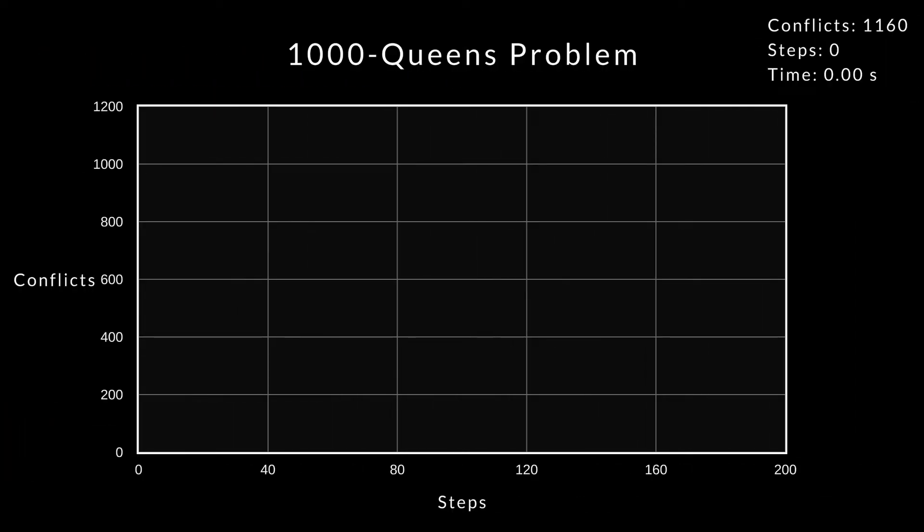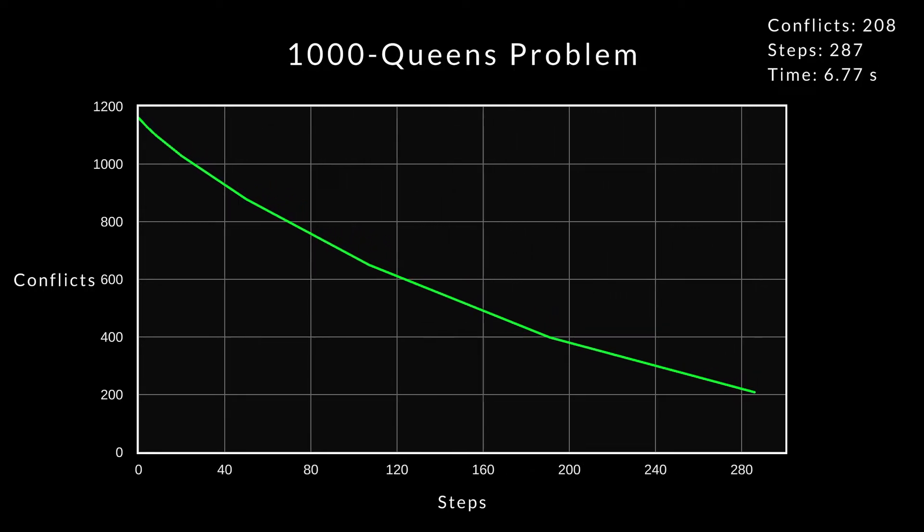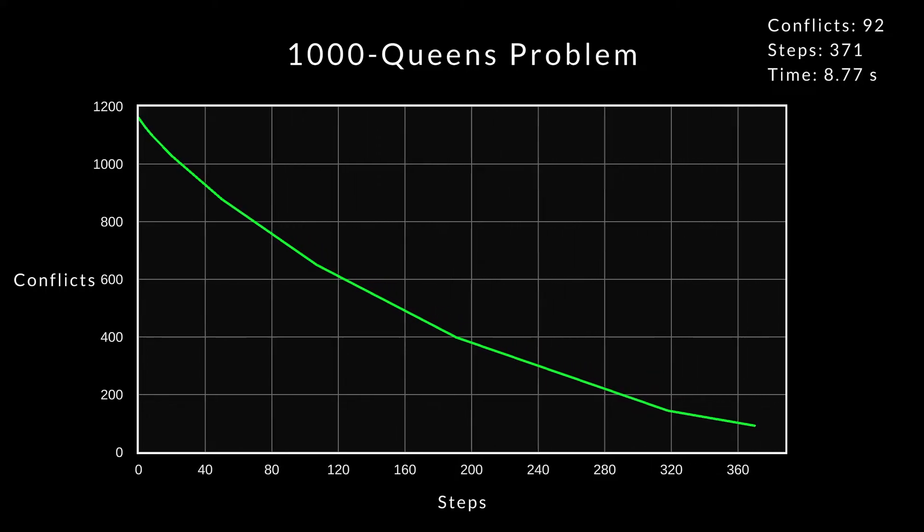Let's try to solve the 1000 queens problem. The only thing we have changed is the way we count conflicts. I think it's amazing how much faster the algorithm is with the small changes we have made.